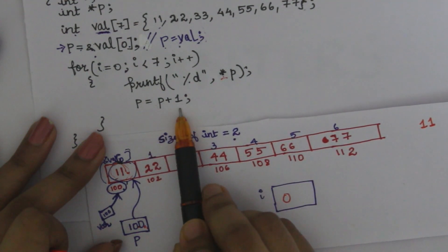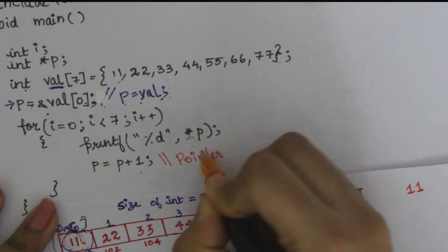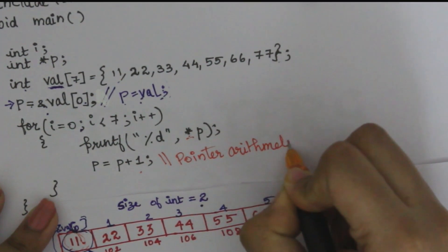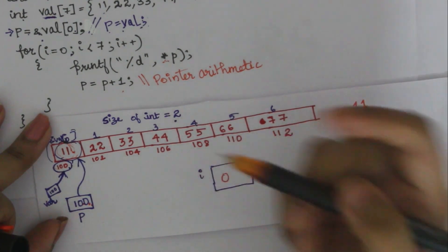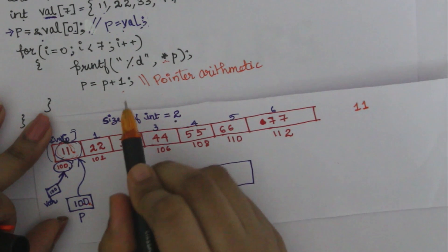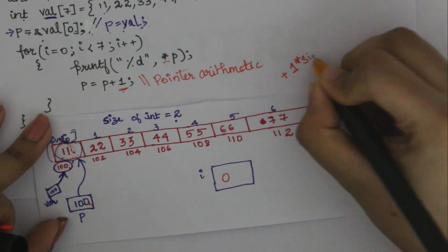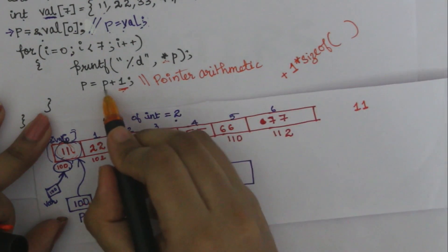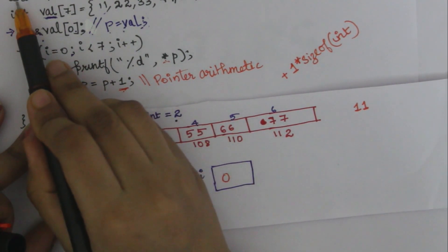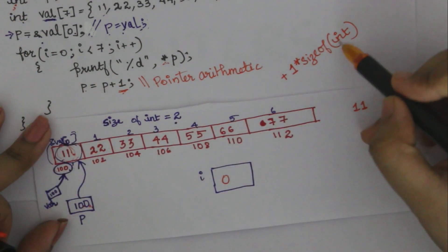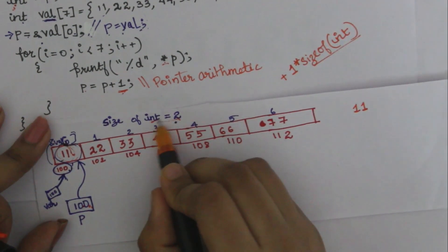Now we use p plus 1. We use pointer arithmetic. If you use a pointer and do p plus 1, it does not simply add 1 to the address. Pointer arithmetic means: address plus 1 multiplied by size of the type. For an integer pointer it is size of int. If it is a float pointer, it is size of float. The size of int we declared here is 2, so it moves 2 locations forward.